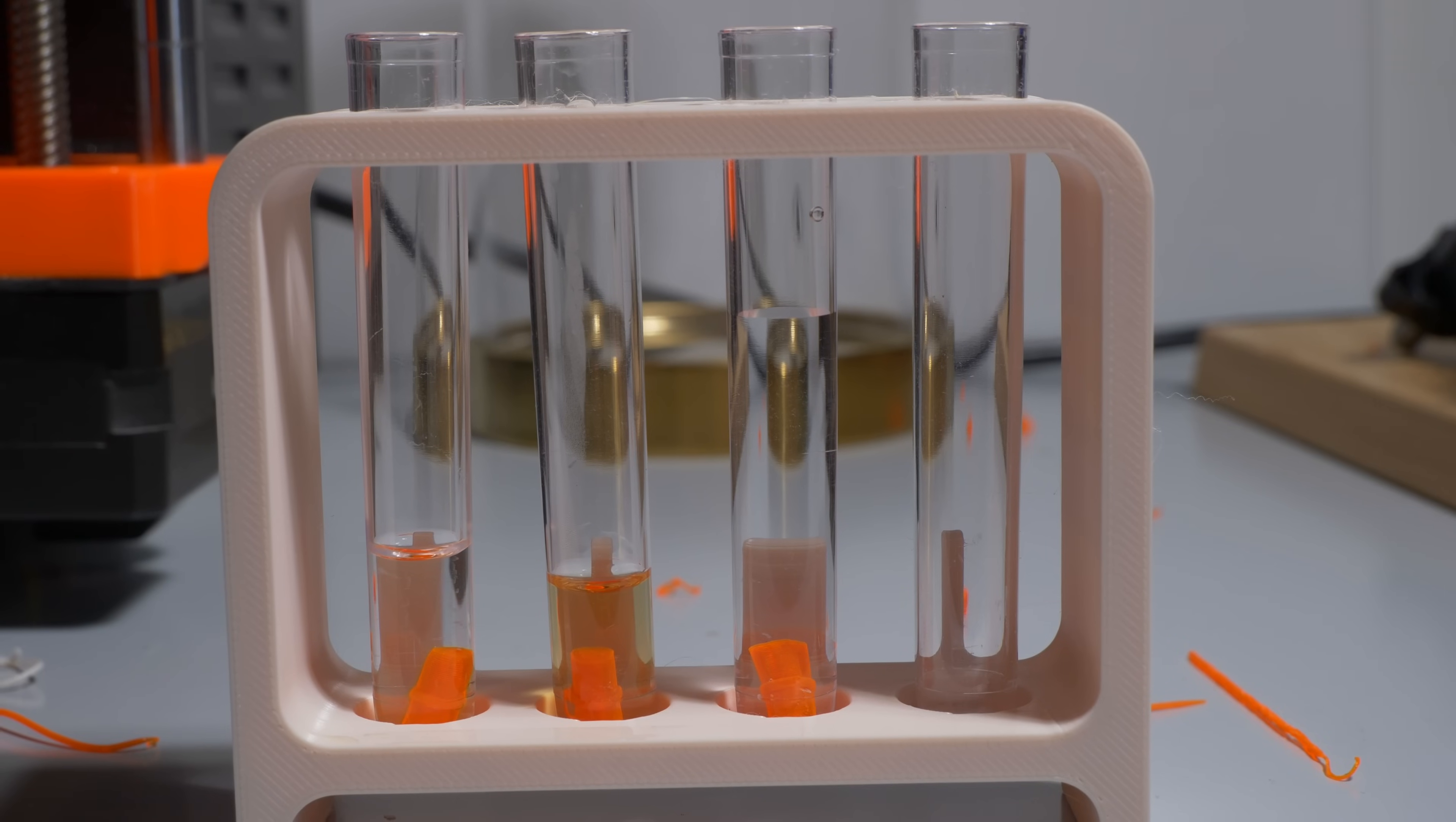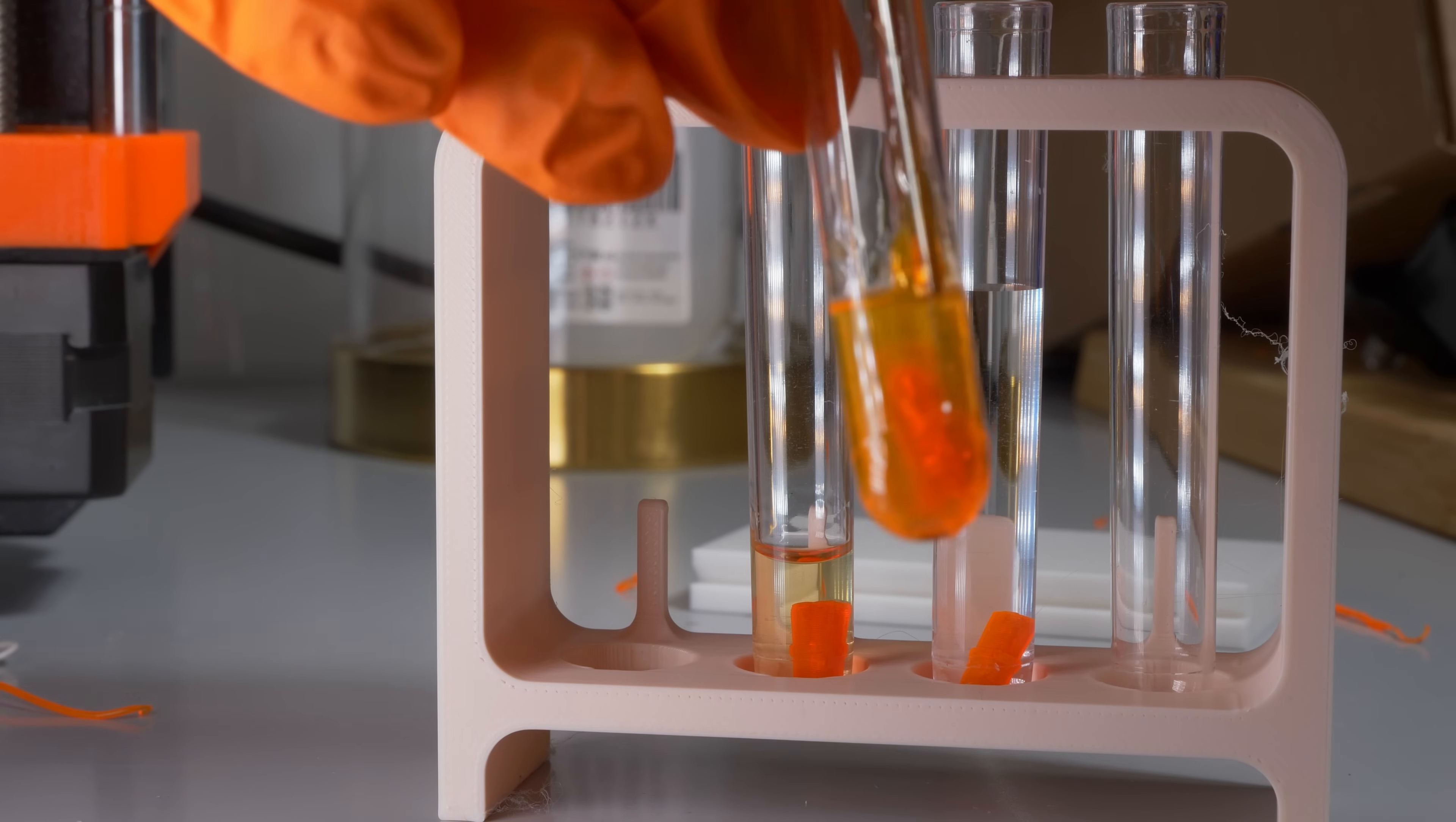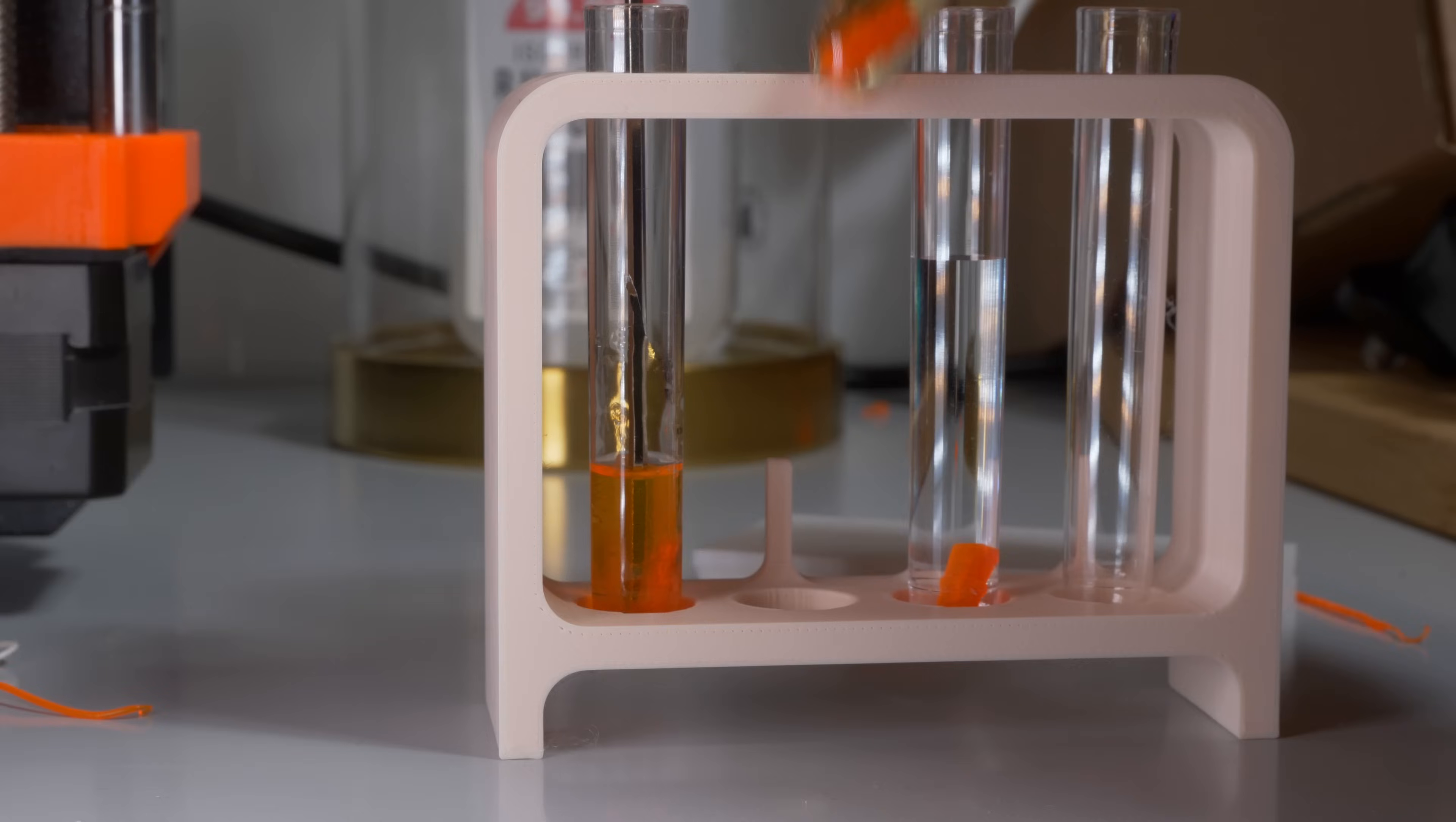Leaving these for 24 hours tells us everything. The isopropyl alcohol has completely obliterated the PVB, turning it into goop. The ethanol has affected the PVB but not really dissolved it, and that's because ethanol at 99% is nearly impossible to buy as a normal person. The water does absolutely nothing, as expected.